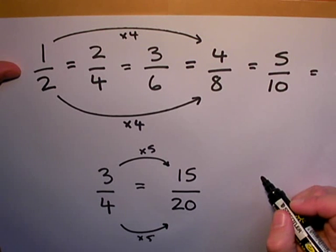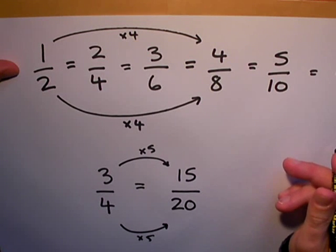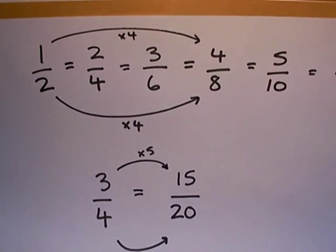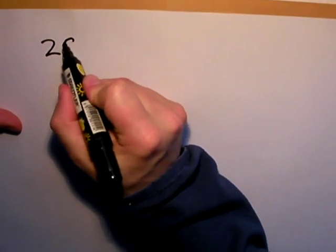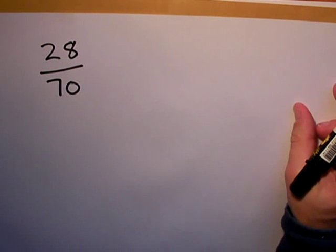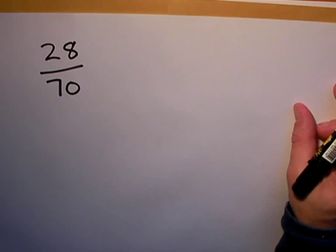The reason it might be thought of as cancelling up is the opposite to this is in fact cancelling down. If you want to take a fraction that is more complicated, such as twenty-eight seventieths, and you want to simplify it to its lowest simplest terms, we can divide both numbers by the same number, and this is called cancelling down.